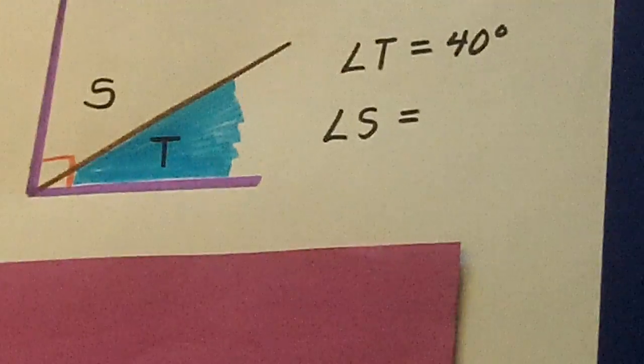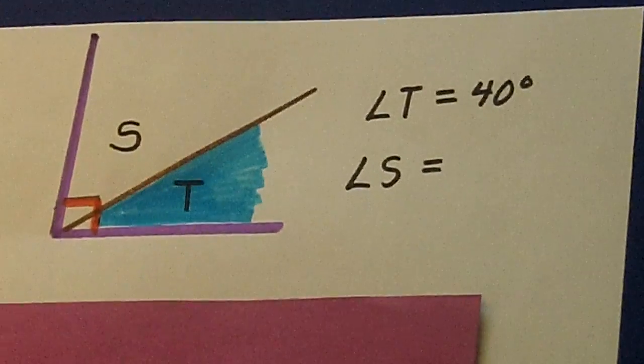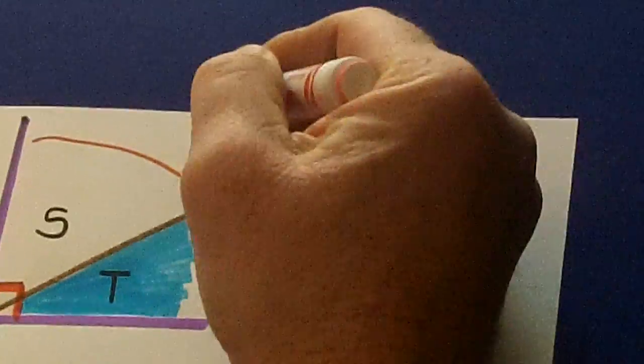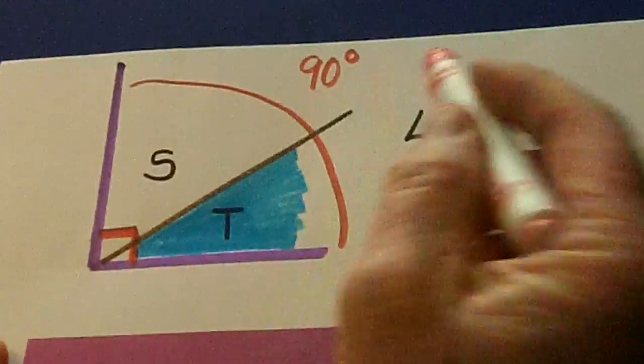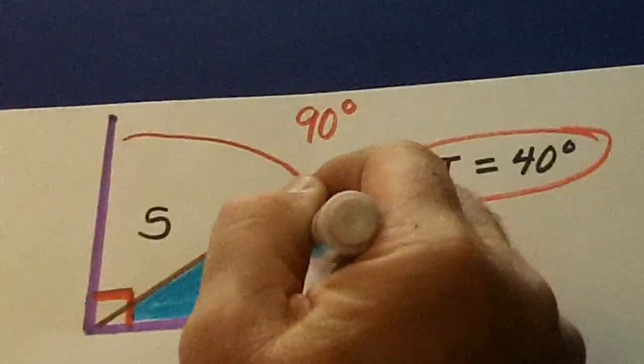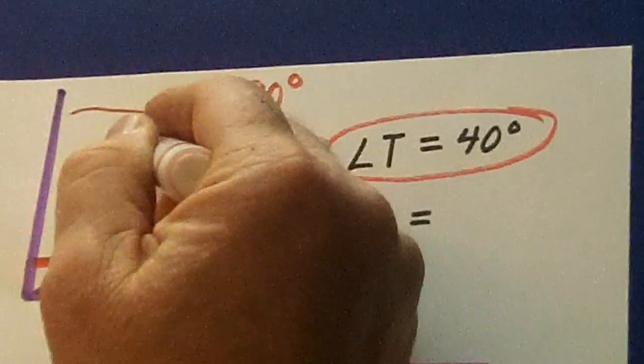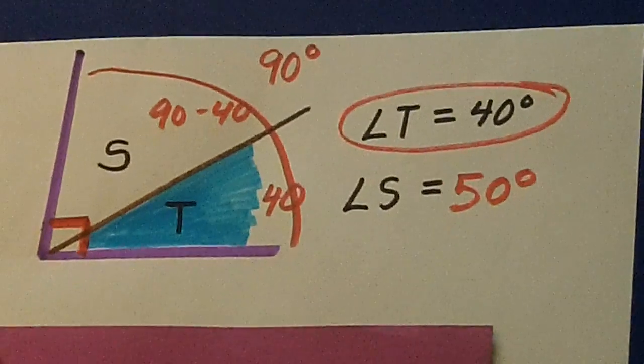Right up here we have a right angle. A right angle means this whole thing is 90 degrees. Both S and T add up to 90 degrees. Right here, T is equal to 40, and so S is simply 90 minus 40. S is 50 degrees. Pretty easy, huh?